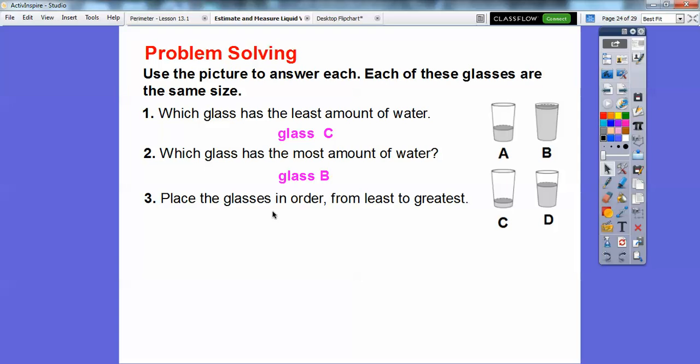This one says place the glasses in order from the least to the greatest. So this one looks like it's the least. So I'll slide that one right here. This one looks like it's the next one. So it would go right here. So this one's the next one right here. And then finally, this guy's going to be the fullest one right there. So if we placed him in order, then we'd go C, A, D, B right there.